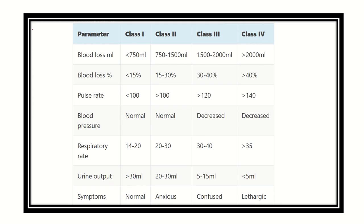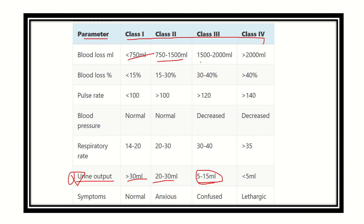Here we can see the parameters and different classes of volume loss. Most importantly, it is the urine output. When urine output is more than 30 ml per hour, it is Class 1 with volume loss up to 750 ml. When urine output is 20 to 30 ml, volume loss is 750 to 1500 ml. When urine output is 5 to 15 ml, volume loss is between 1500 to 2000 ml. When urine output in the last hour is less than 5 ml, the blood loss is more than 2000 ml.